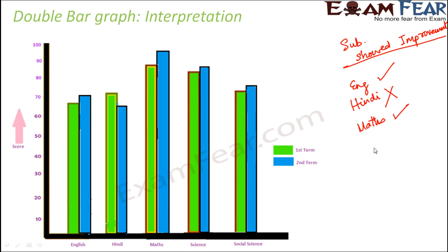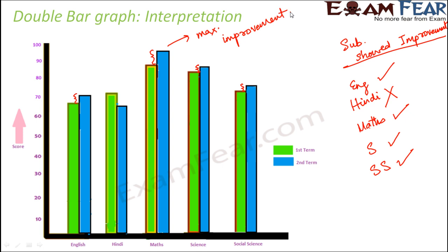Maths, science, and social science all showed improvement, since their second term bars are taller than the first term bars. So English, Maths, Science, and Social Science all showed improvement, while Hindi did not. Now, which subject shows the best improvement? That is the subject where the difference between the two bars is the maximum. We can see the maximum difference in Maths, so Maths showed the maximum improvement from first term to second term. This is how a double bar graph gives you a lot of useful information at a glance.